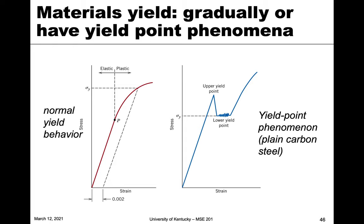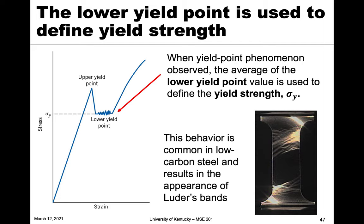For the yield point phenomenon, the lower yield point is the value used as the yield strength. If you look up the value for yield strength, this is where we're going to start to get plastic deformation. In most design criteria you don't want your material to permanently deform — that's bad — so this is the value we want to avoid exceeding. We use the average of the lower yield point value as the yield strength.